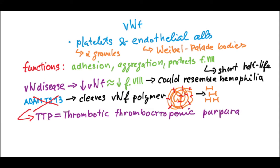Another interesting thing is that patients with blood type O have slightly decreased levels of von Willebrand's factor, making them a bit more prone to bleeding. In contrast, other blood types may be somewhat protective, which could be relevant at higher age.